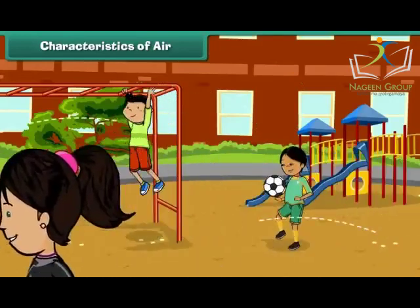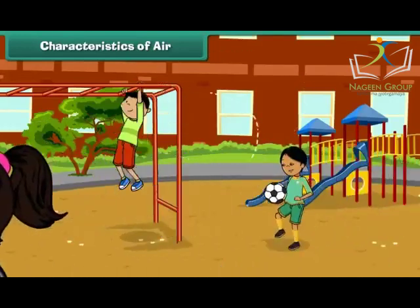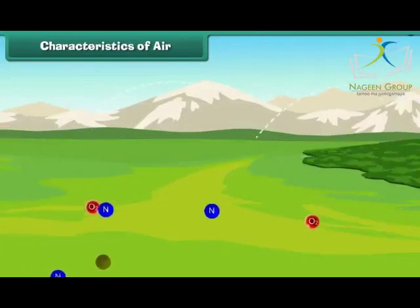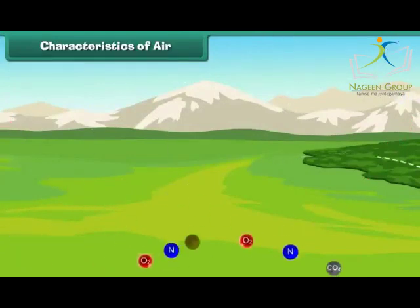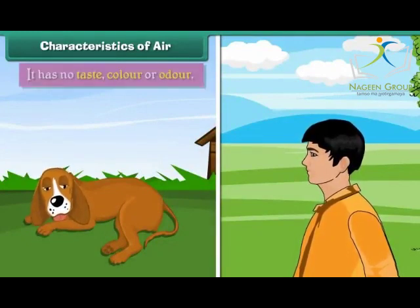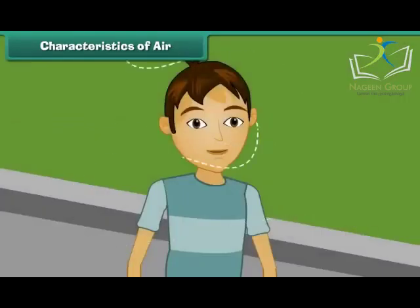Characteristics of Air: We are surrounded by air. Air is a mixture of gases and other particles, and it is essential for the survival of living things. All living things breathe in and breathe out air. It has no taste, color, or odor.